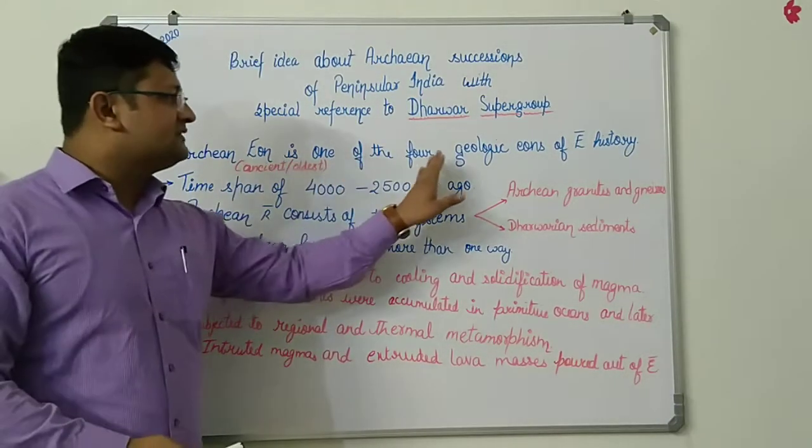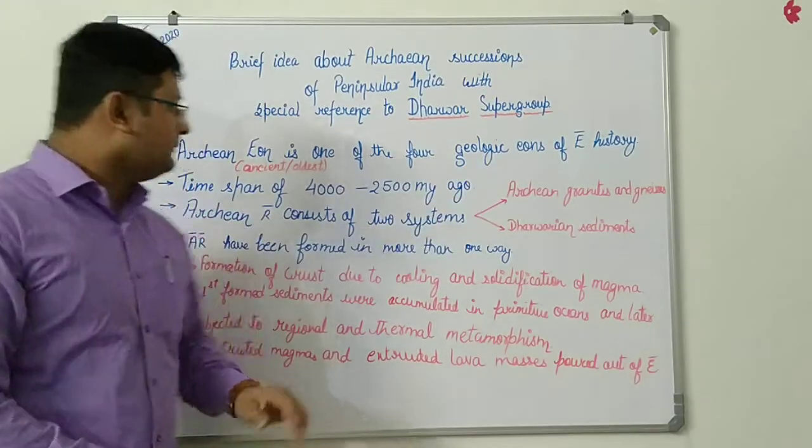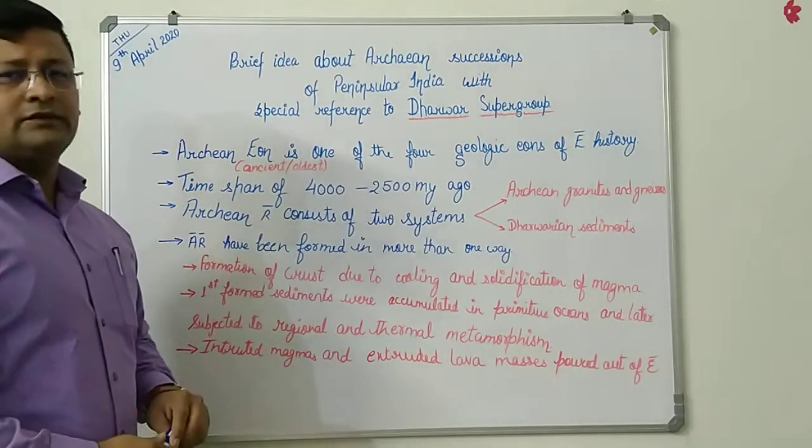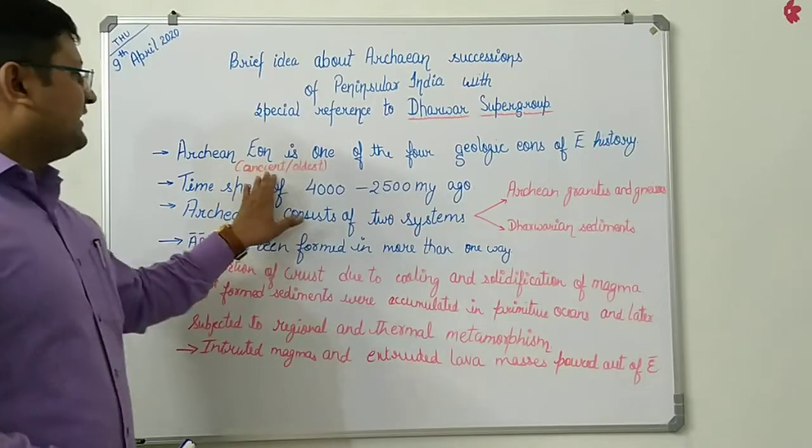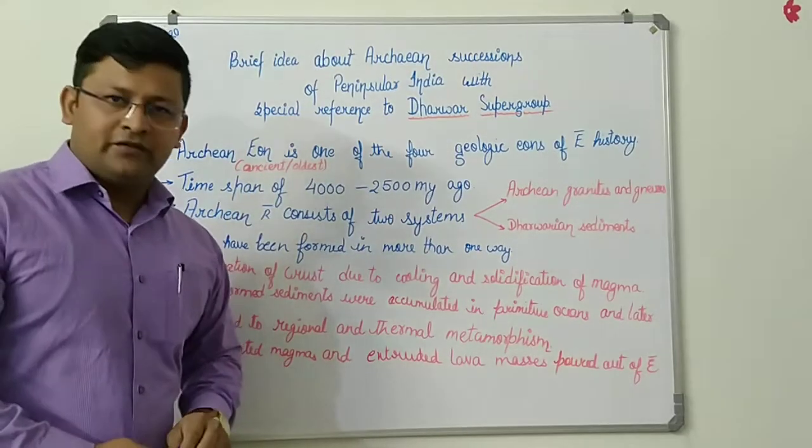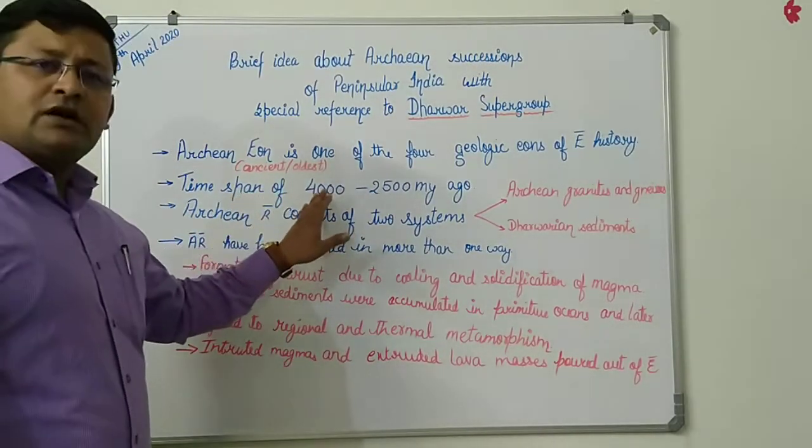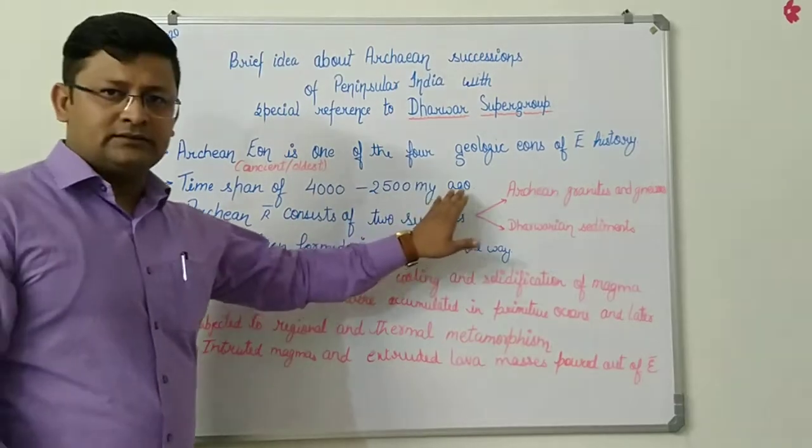Archean Eon is the fourth geological eon of the earth history. It is also known as the ancient or oldest rock formation of India. The time span of Archean is 4000 to 2500 million years ago.